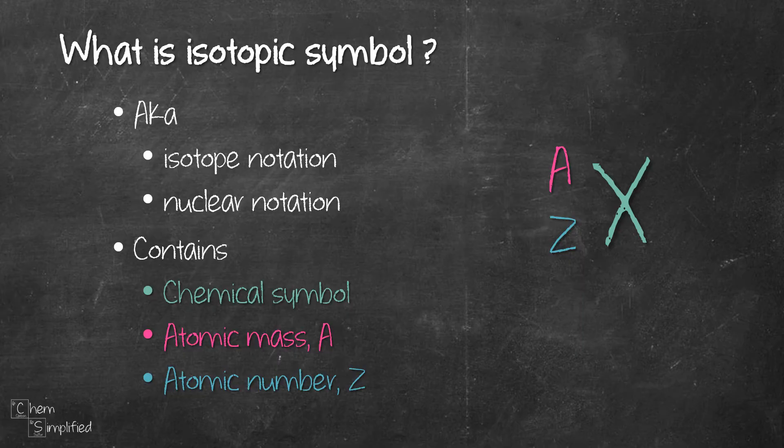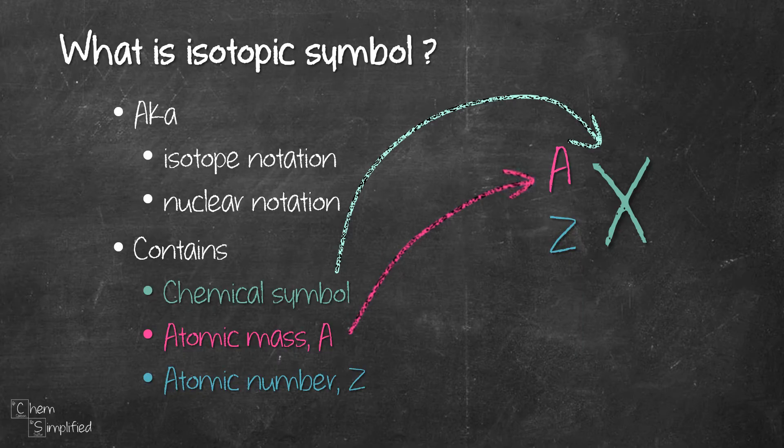We can write it out this way, where X is the chemical symbol, A is the atomic mass and we write it at the top left, and Z is the atomic number and we write it on the bottom left.